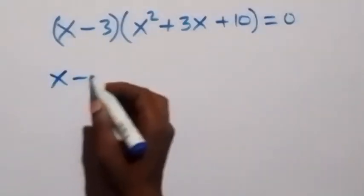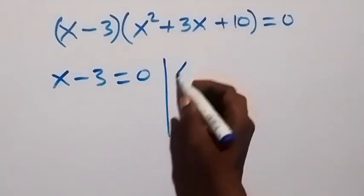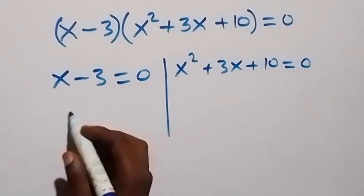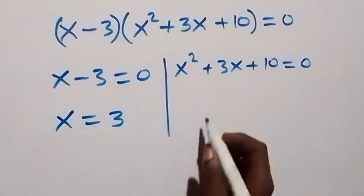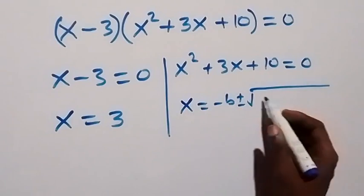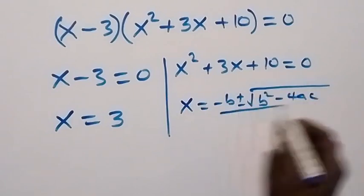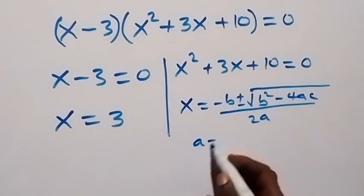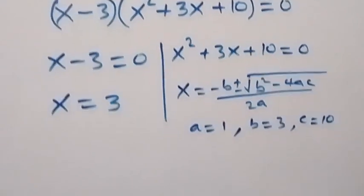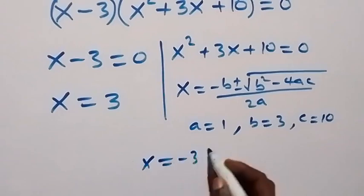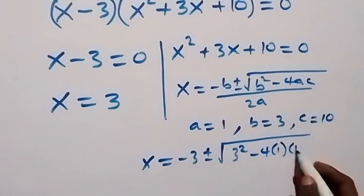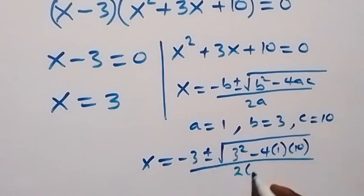From here we have two possible cases. We have x minus 3 equals to zero, and also we have x squared plus 3x plus 10 equals to zero. On the first case, x equals to 3. For the second case, we can use the quadratic formula: x equals to minus b plus or minus square root of b squared minus 4ac, all over 2a, where a equals to 1, b equals to 3, and c equals to 10.